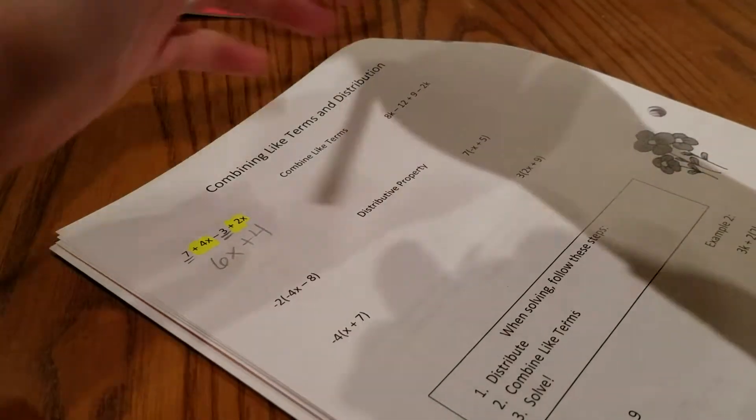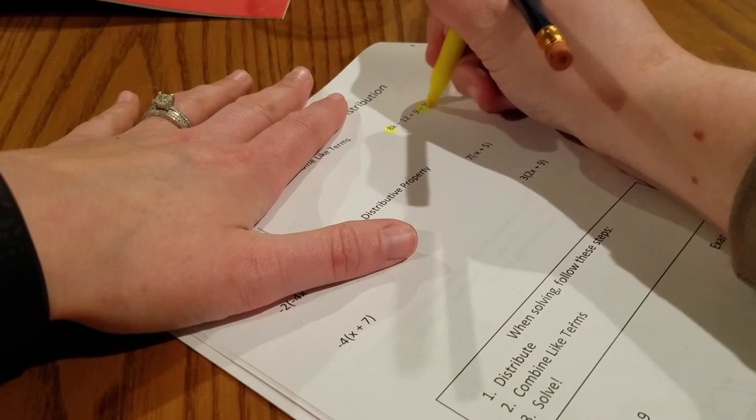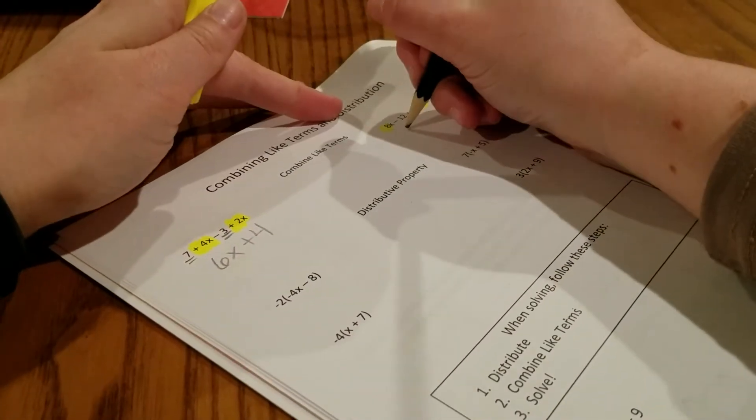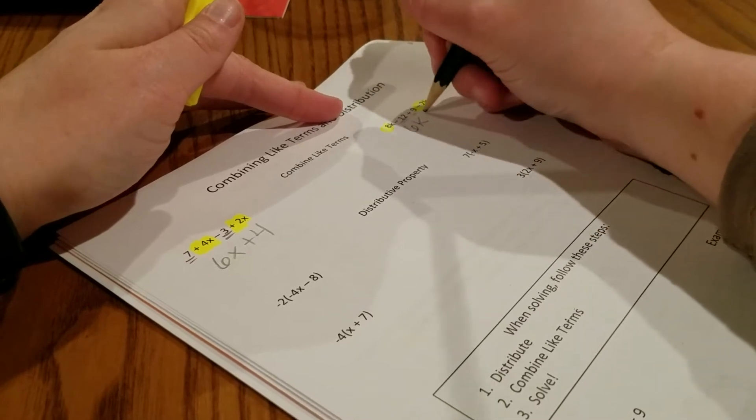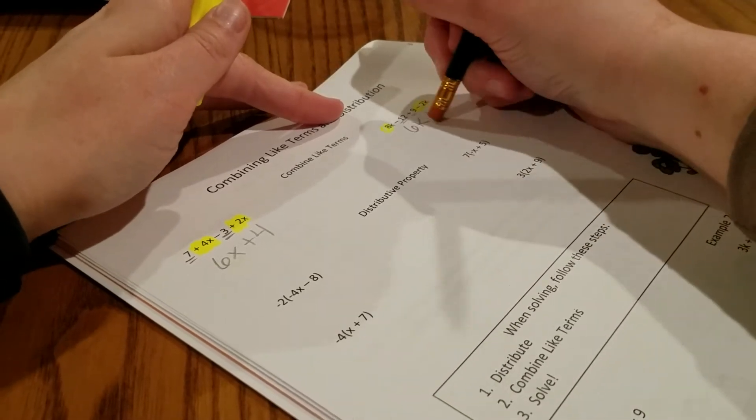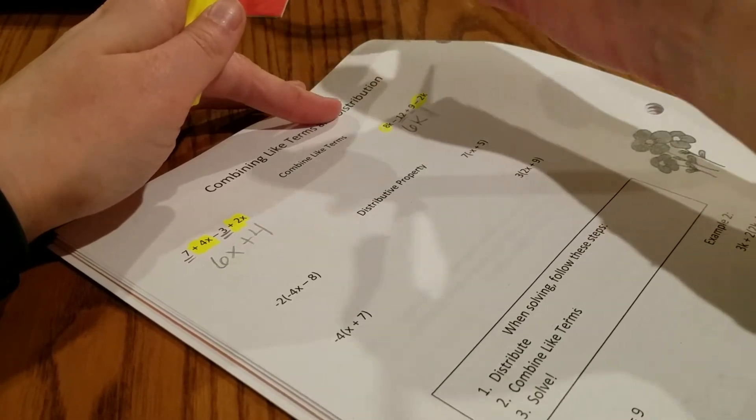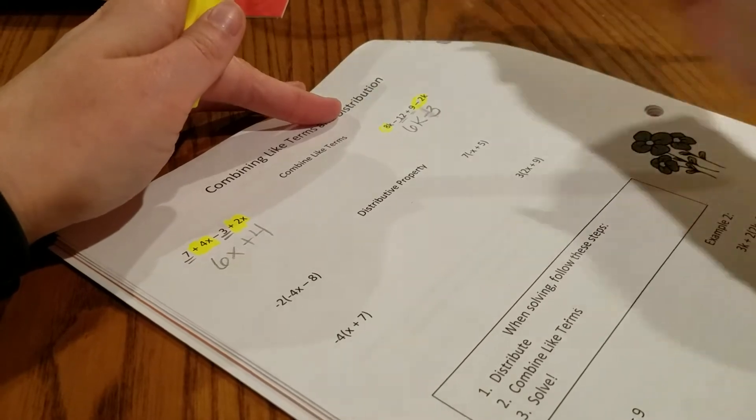In the next one, we have 8k and a negative 2k, which is going to give me 8k minus 2k is 6k. And I have a negative 12 and a plus 9, which is going to give me negative 3.